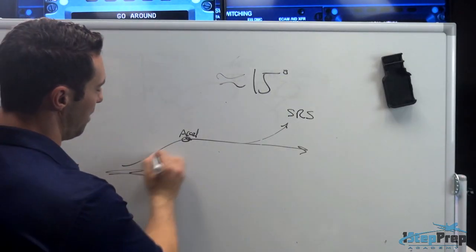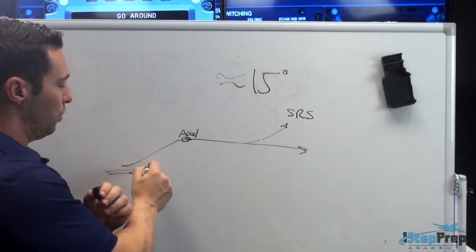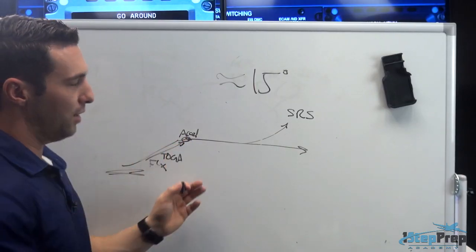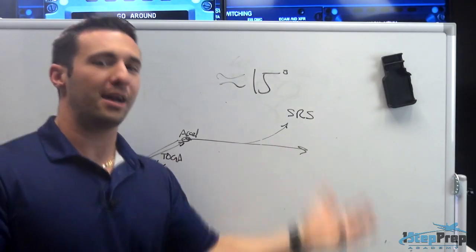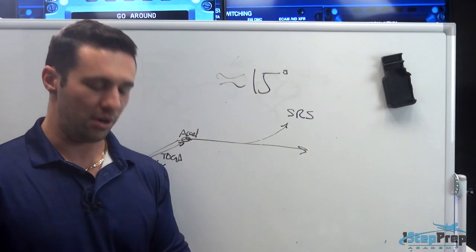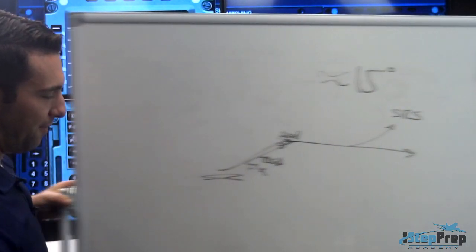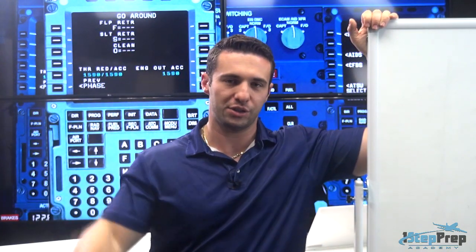If you're still climbing and you're not happy with your climb performance, you could go from Flex to TOGA in the climb and you're not necessarily going to reactivate SRS — because you're already in SRS as it was set on takeoff. Something to consider is that you don't have auto thrust capability when you're up in TOGA; it's not going to vary the thrust for you. You also have SRS activation and the go-around phase not honoring altitude constraints.